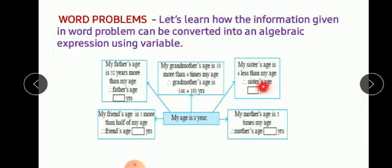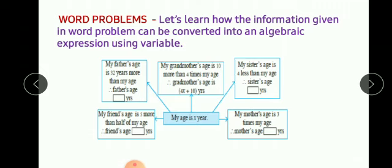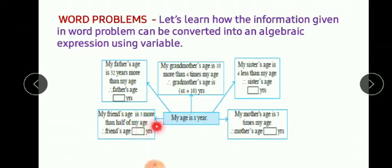So if your age is x years, therefore the sister's age is x minus 4, because 4 less than my age. So in this box you will write x minus 4. Now, my friend's age is 5 more than half of my age. Therefore friend's age is: 5 more means plus 5, and half of my age means x upon 2. So friend's age will be x upon 2 plus 5.